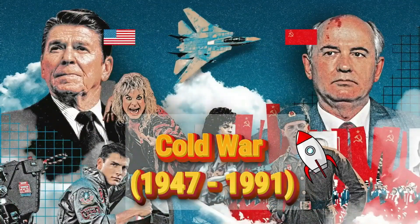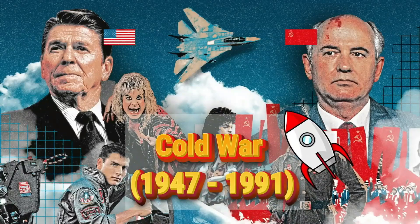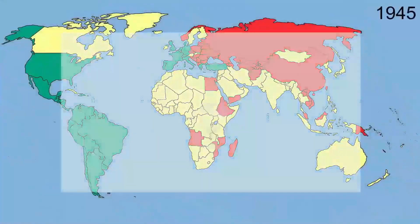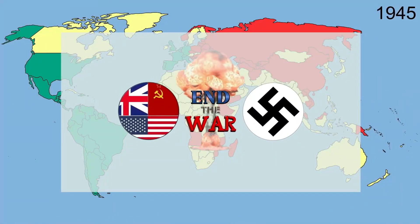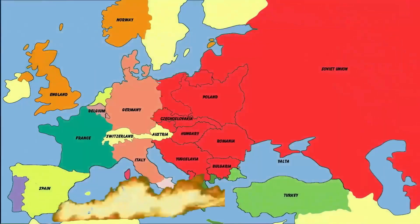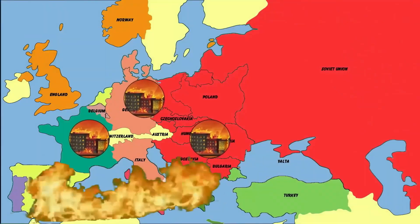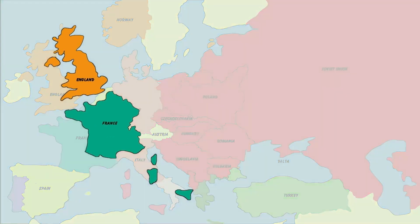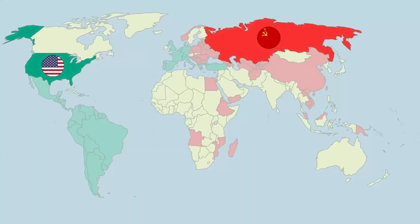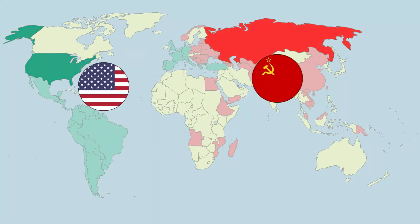Today we will talk about the Cold War. In 1945, World War II ended with the defeat of the fascists. Europe was devastated; countries like Britain and France gradually lost their position and influence. Meanwhile, the U.S. and the Soviet Union emerged as world superpowers, but carried two opposing political ideologies.